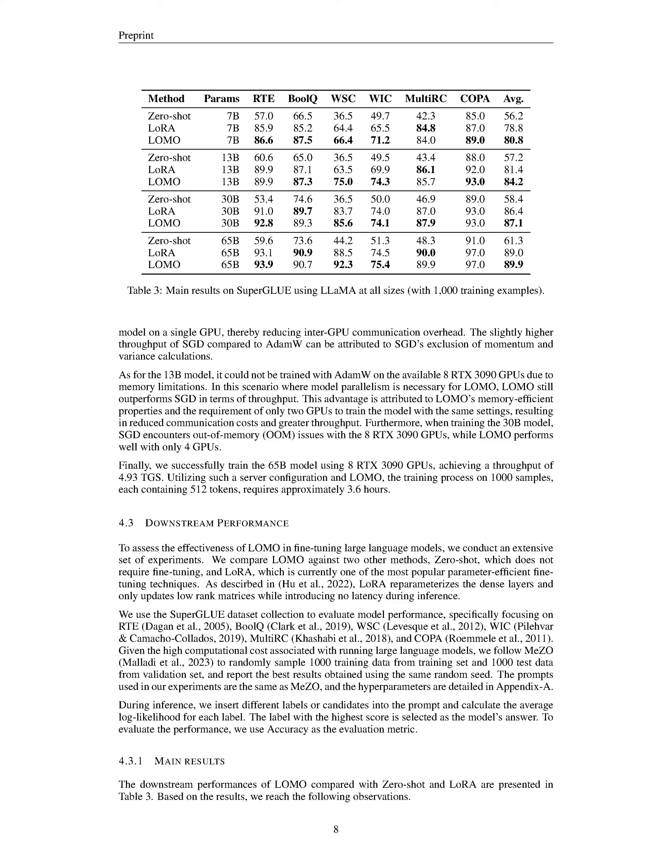In Section 4.3, Downstream Performance, we aim to gauge the effectiveness of LOMO in fine-tuning substantial language models through a wide range of experiments. We place LOMO in comparison with two other techniques: SHOT, which doesn't necessitate any fine-tuning, and LoRA, presently one of the most utilized approaches for efficient fine-tuning. LoRA reconfigures the densely layered matrices and only makes updates to the low-rank matrices, without adding any delay during inference. We apply the SuperGlue dataset collection to assess model performance, particularly focusing on tasks such as RTE, BoolQ, WSC, WIC, MultiRC, and COPA.